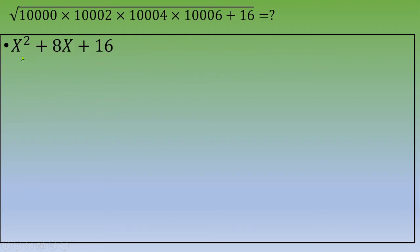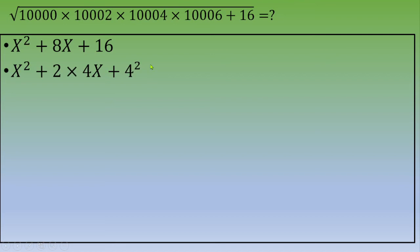Now we want to transform this into a perfect square. We observe that 16 = 4², and X² is already a perfect square. The middle term 8X equals 2 × X × 4, confirming this fits the pattern a² + 2ab + b².